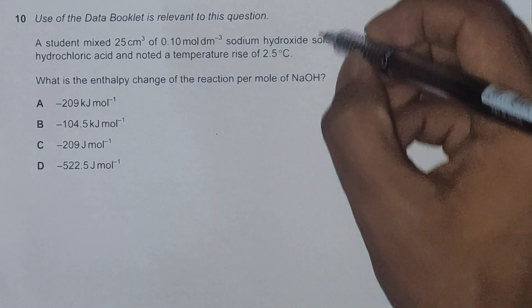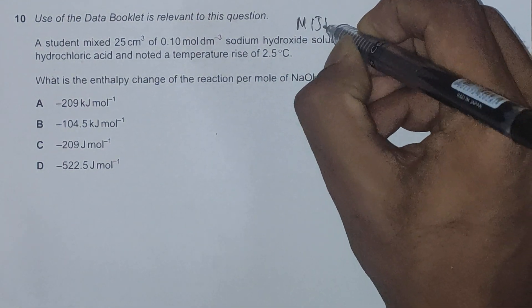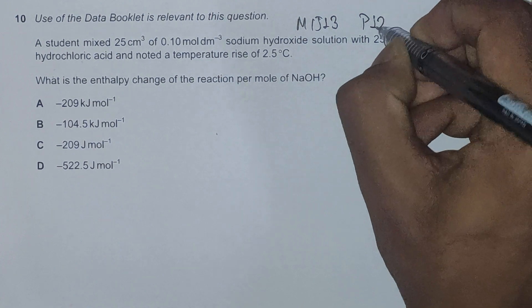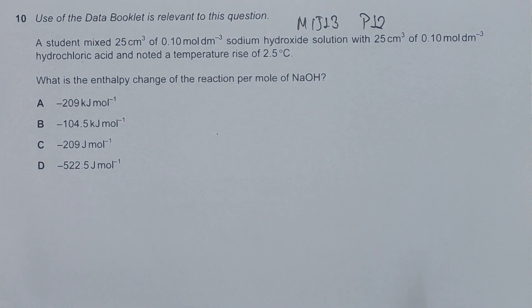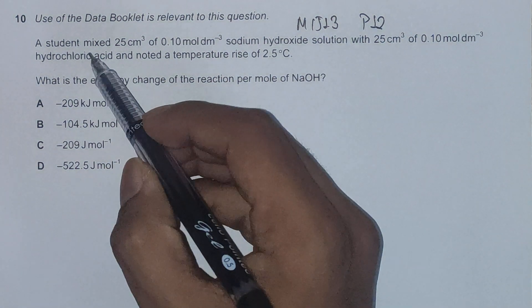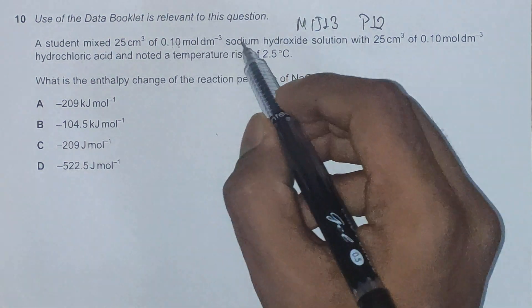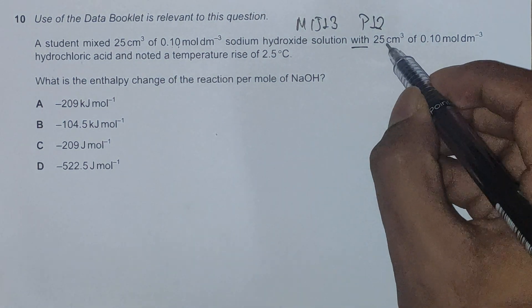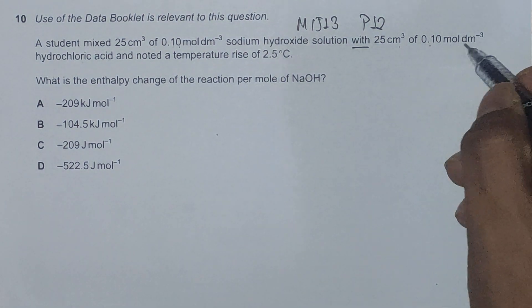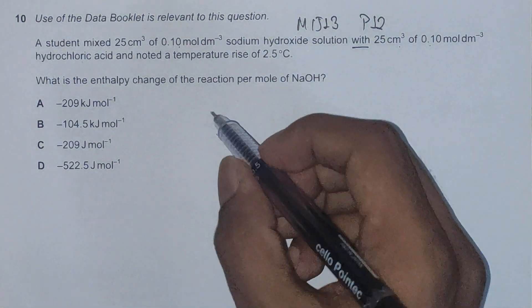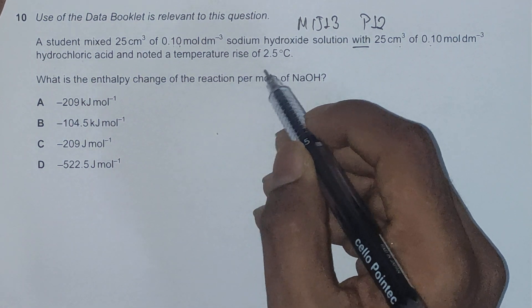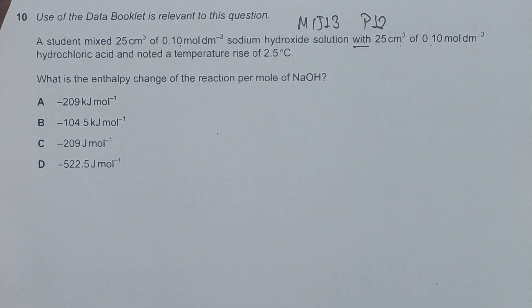Hello everyone, this is a June 2013 question, paper 1, question number 10. It's concerned with the chapter energetics. The question reads: a student mixed 25 cm³ of 0.1 mol per dm³ sodium hydroxide solution with 25 cm³ of 0.1 mol per dm³ hydrochloric acid and noted a temperature rise of 2.5 degrees Celsius.